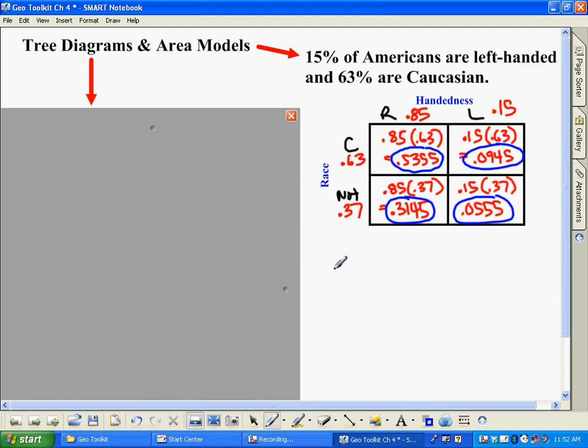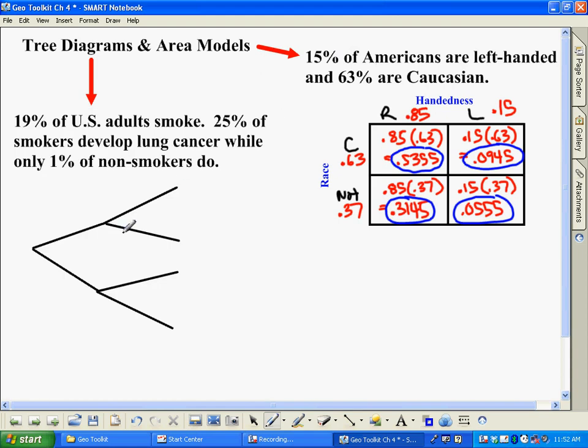So here's the limitation of this. This is something where it doesn't matter whether or not you're Caucasian or not. You're still a 15% chance of being left-handed and 85% chance of being right-handed. So what if we were to change it now? So here's some more statistics for you.